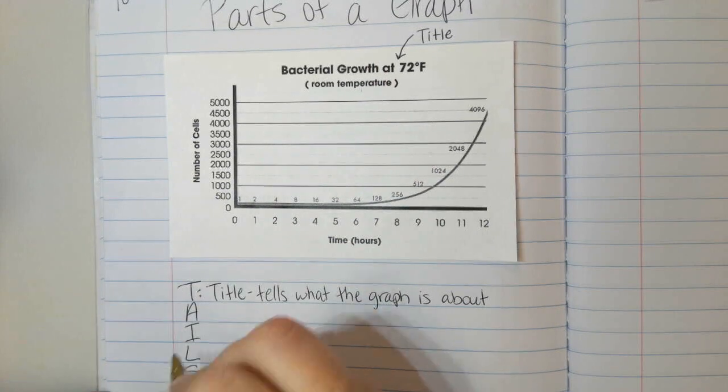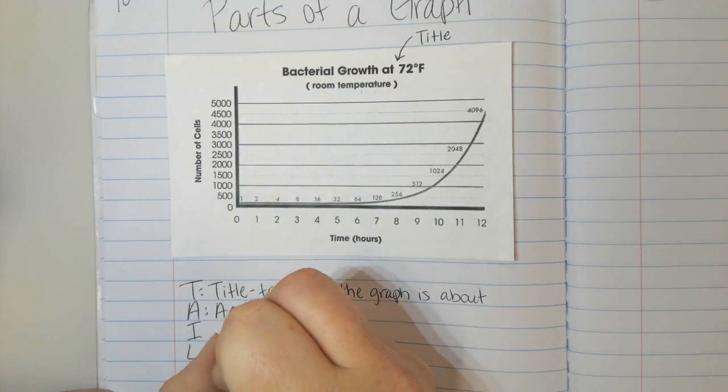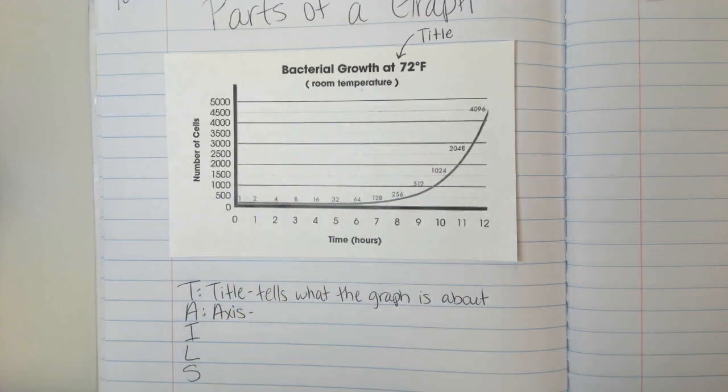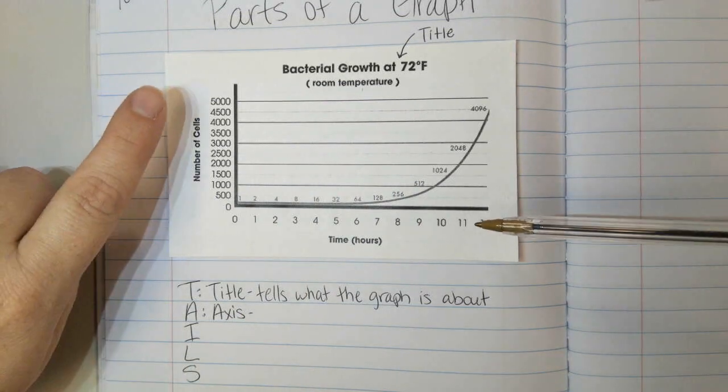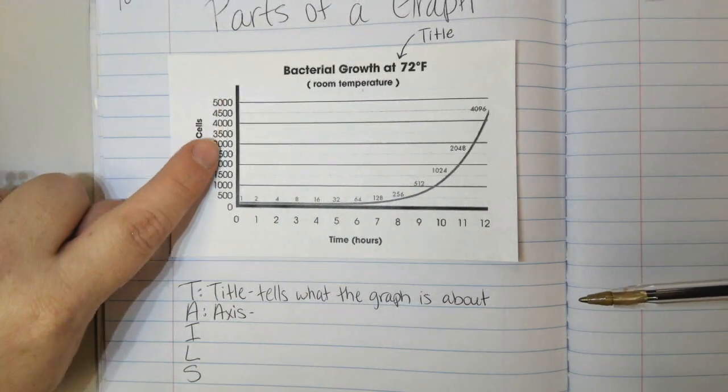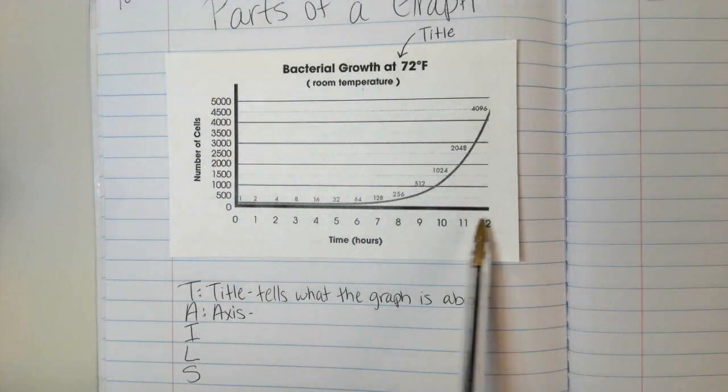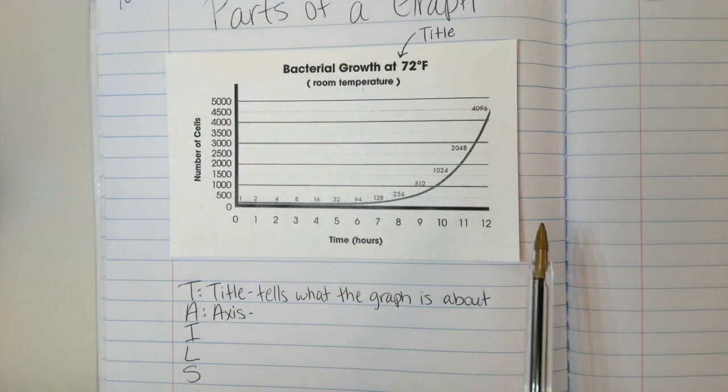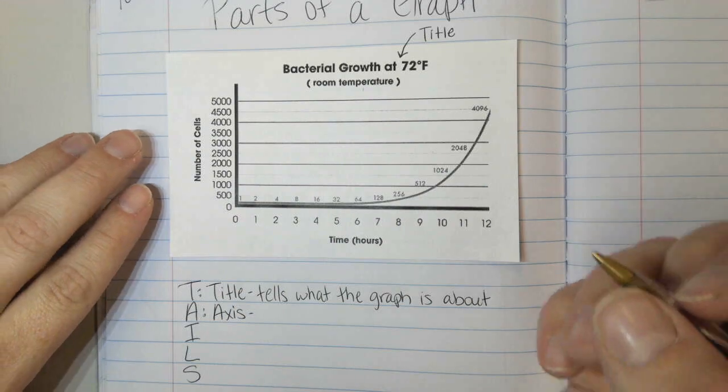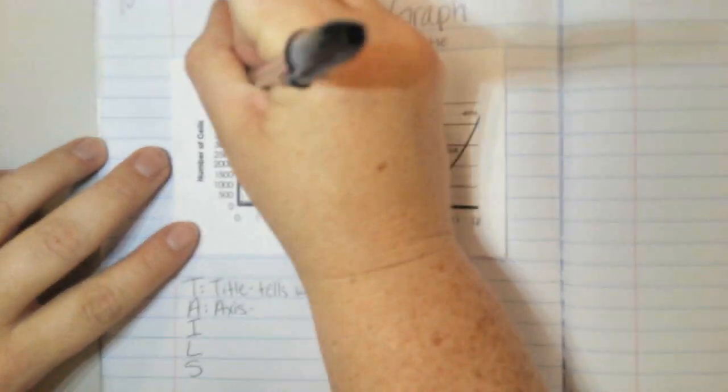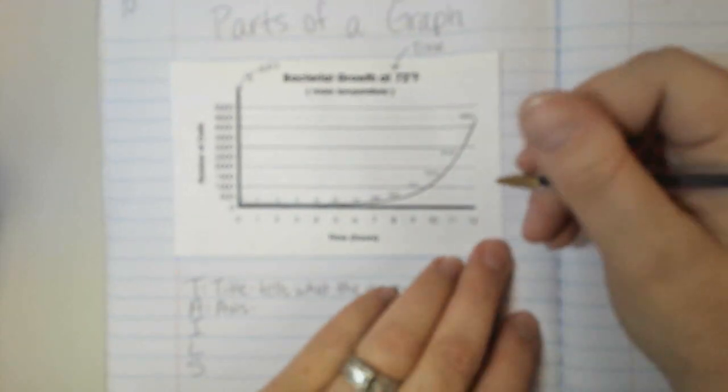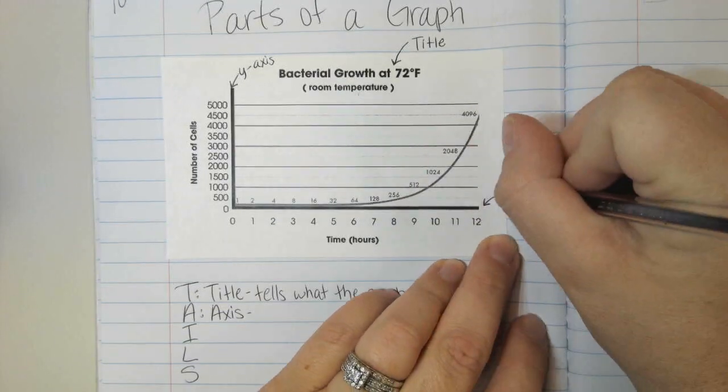The A in TAILS stands for axis. In a graph, there are two of these. The Y axis is the up and down axis. The X axis is the one that goes across the bottom from left to right. So this is our Y axis. We're going to label that. And here is our X axis down here.